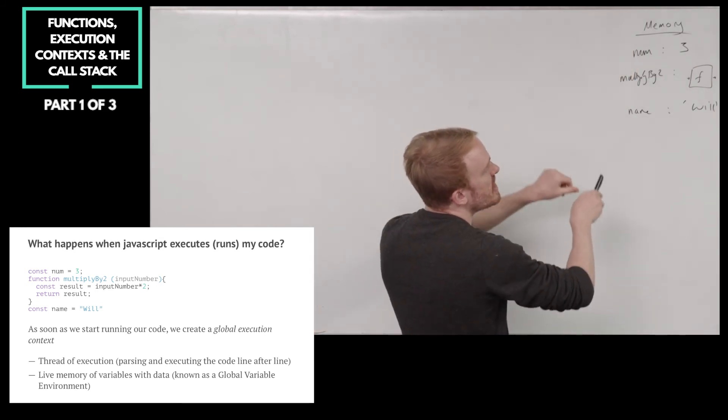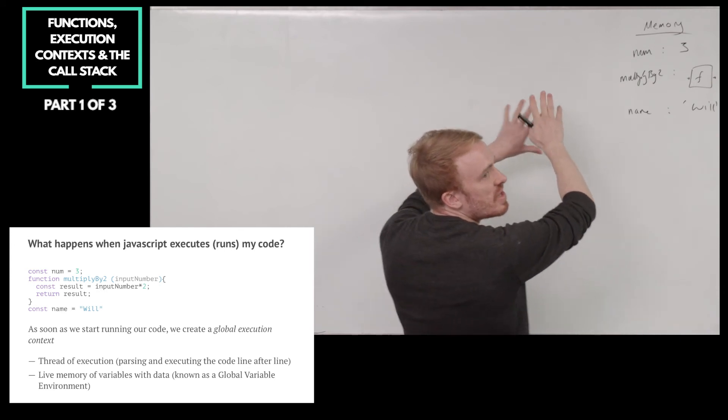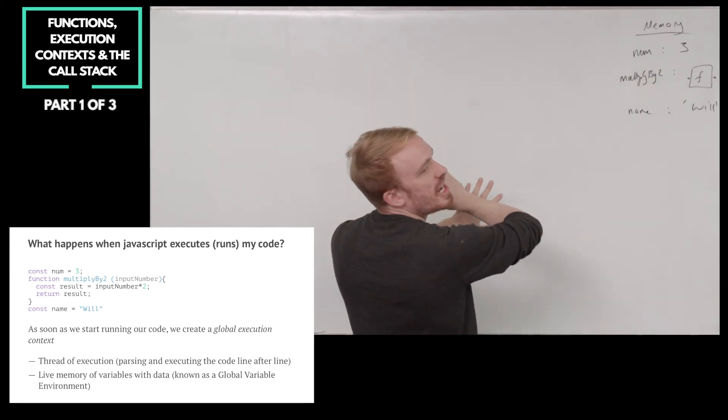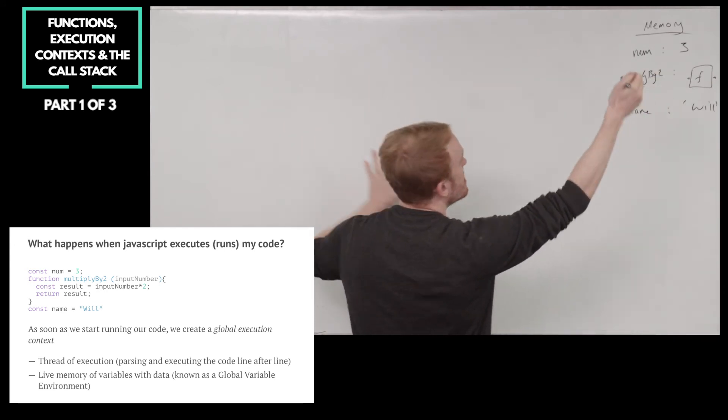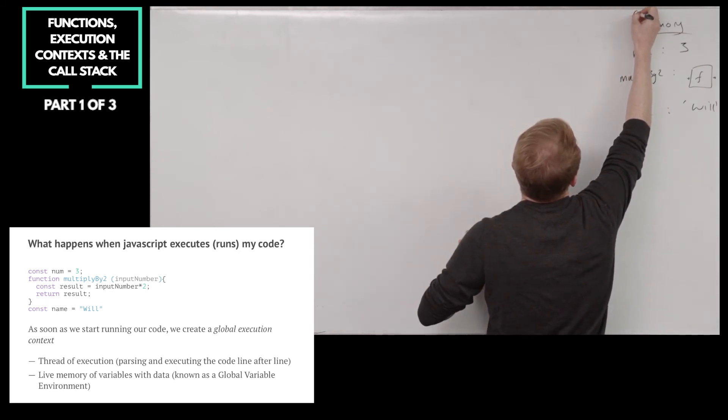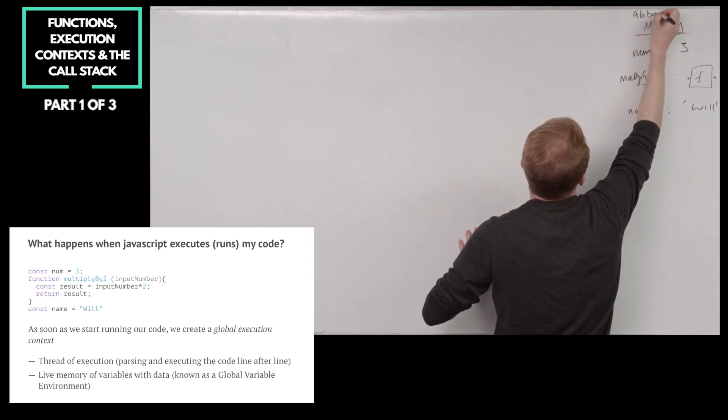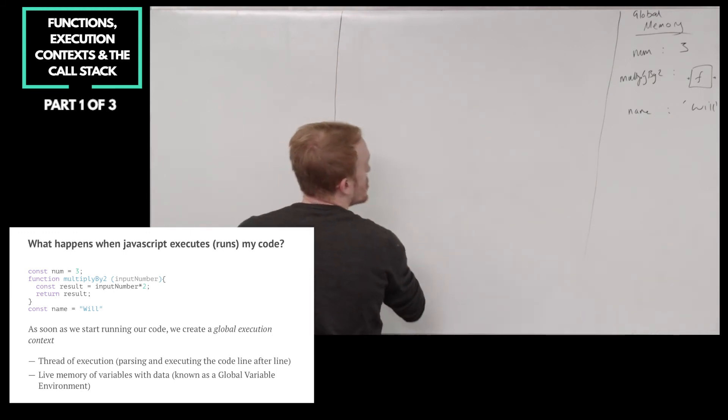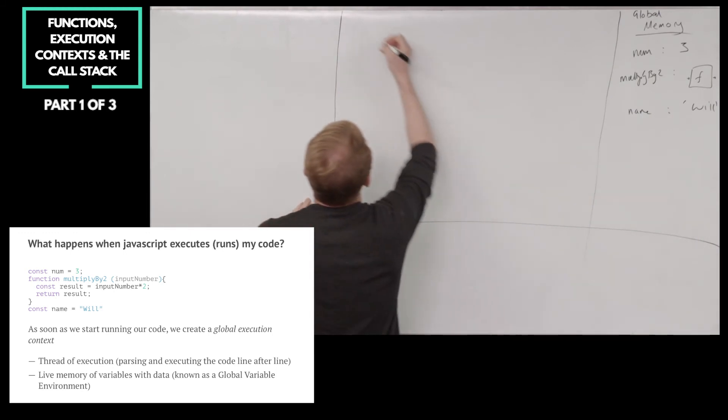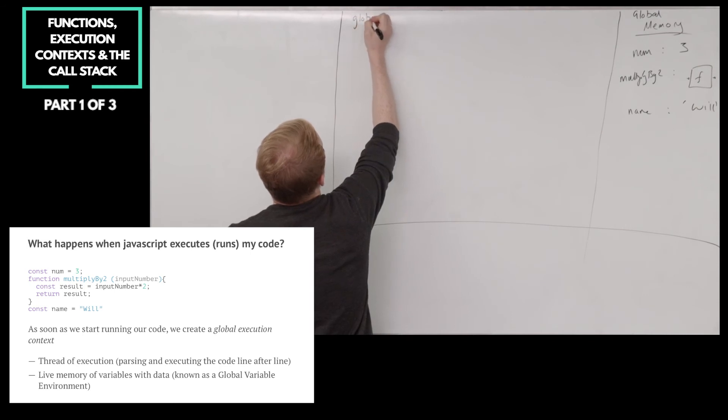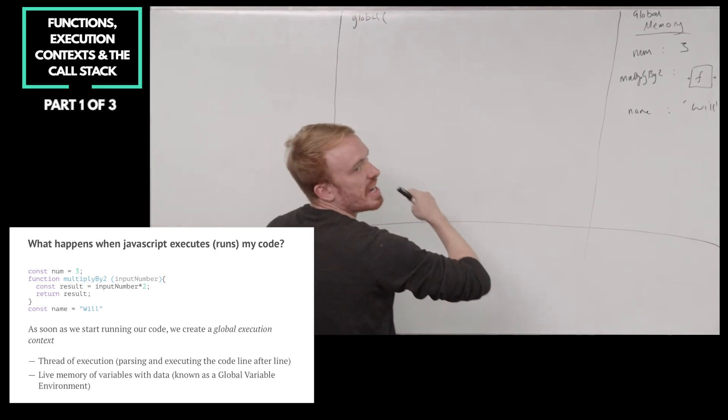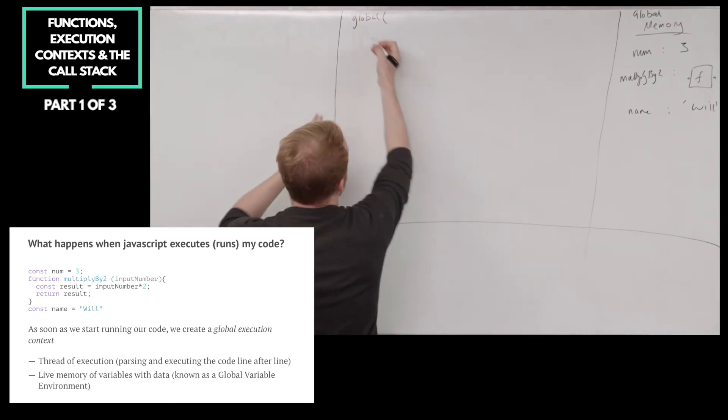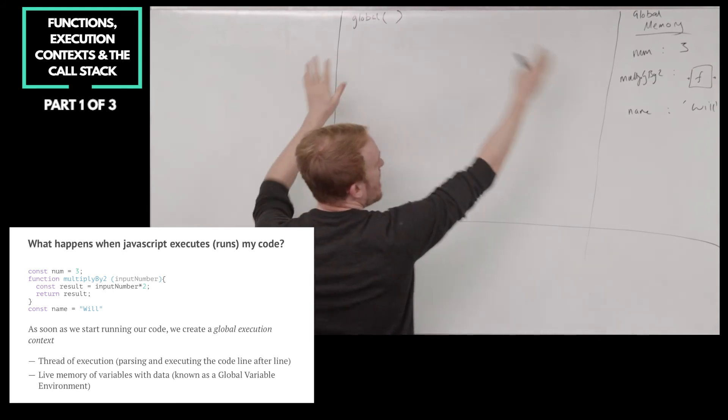That means the stuff that we declare in memory when we first start running our application is going to be available anywhere inside of our application. So we're going to call this the global memory. And this is our global execution context. And we can almost think of it like running, like the whole application's a big function, which we can sort of think of as being global. And we're running the whole application code.